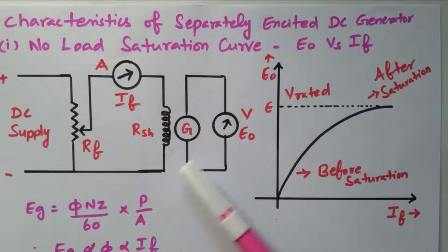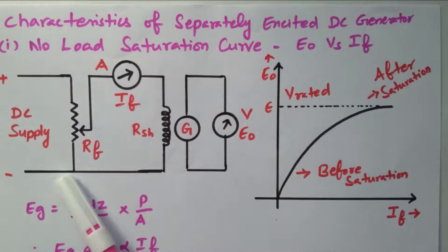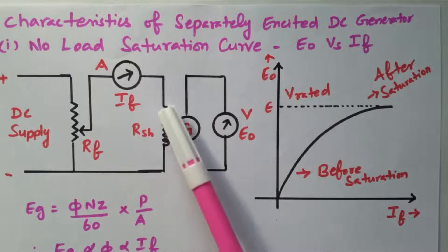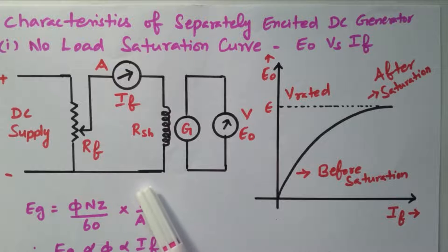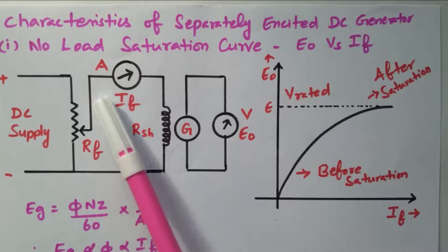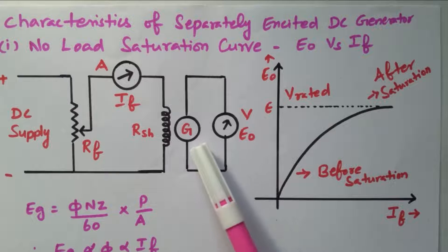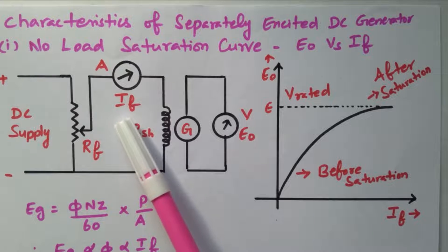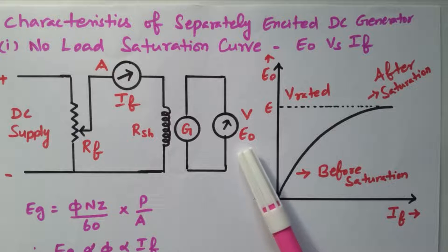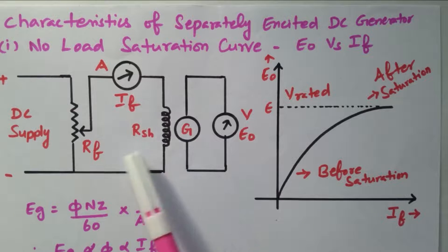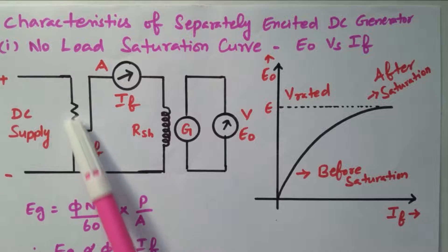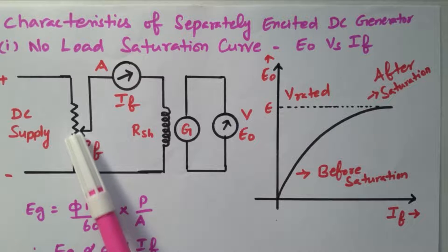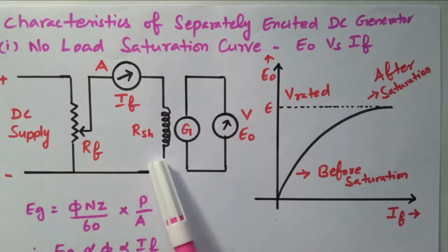The armature is one part. A DC supply is available across which a rheostat is connected in order to control the flow of current. It is connected to one ammeter and then to the field coil of the DC generator. By adjusting this rheostat, we can control the current flowing through the field winding. The EMF generated in the armature can be measured by the voltmeter. Initially, the rheostat is adjusted so that current flows through the field winding.